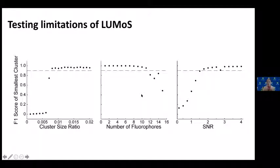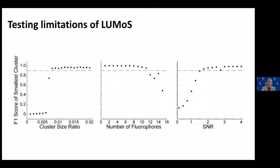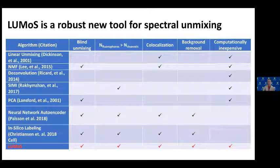The second scenario tested how many total fluorophores can be separated under a four-channel detection scenario. We can separate up to around 11 fluorophores before the F1 score drops below 0.9. The third scenario tested signal-to-noise ratio: under very noisy biological images, the algorithm fails when the SNR drops to around one-half before the F1 score drops below 0.9. These tests showed LUMOS to be a very robust and easy-to-use tool for spectral unmixing.